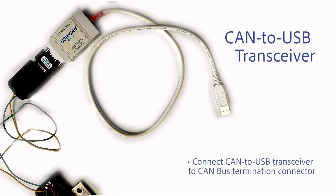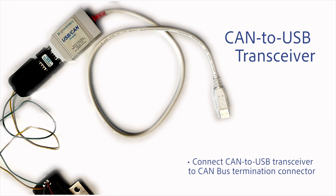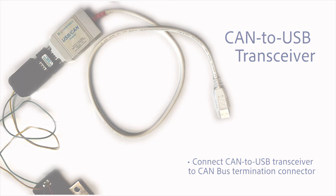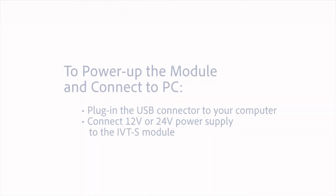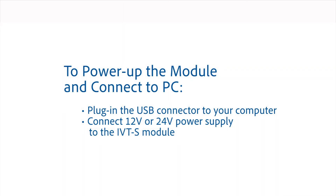Now we will connect the CAN to USB transceiver to the CAN bus termination connector as shown in the picture. Lastly, we will power up the module and connect it to our PC. We will connect the USB connector of the CAN to USB transceiver to our PC and connect the power supply to the IVTS module.